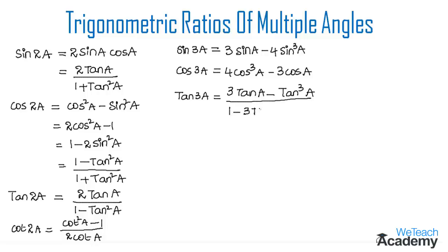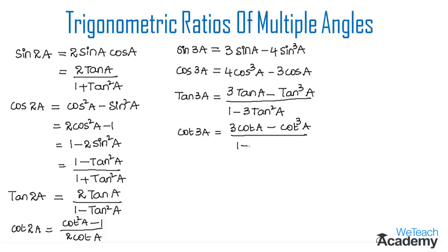We can also write the formula for cot 3A in terms of cot: cot 3A equals 3 cot A minus cot cube A divided by 1 minus 3 cot square A.